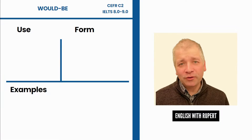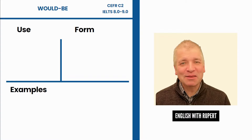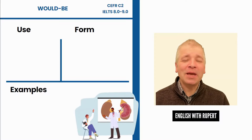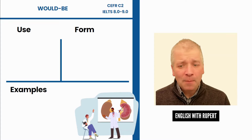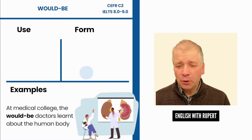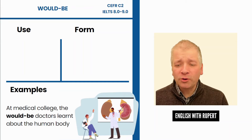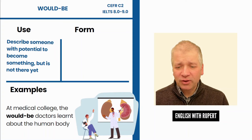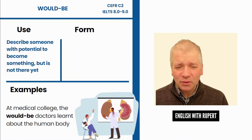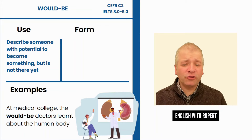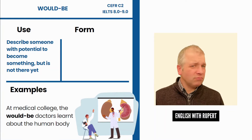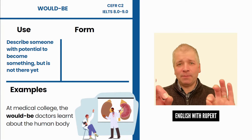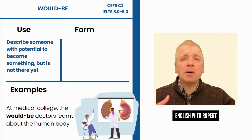The next phrase containing 'would' is 'would be'. Have a look at this example. We see someone teaching about health and a student learning. At medical college, the would-be doctors learnt about the human body. Here we're using 'would be' to describe someone with the potential to become something, but who is not there yet. This student wants to become a doctor but is still in training — so we say 'would be'. It means 'possibly in the future'.